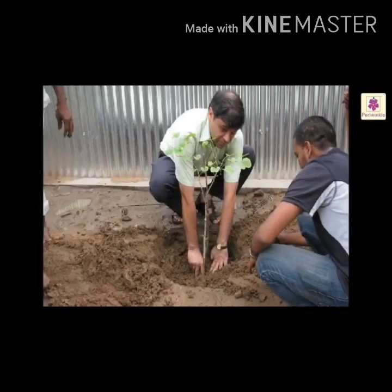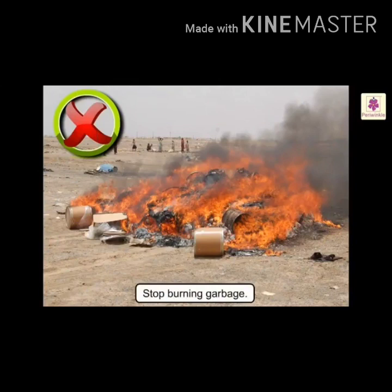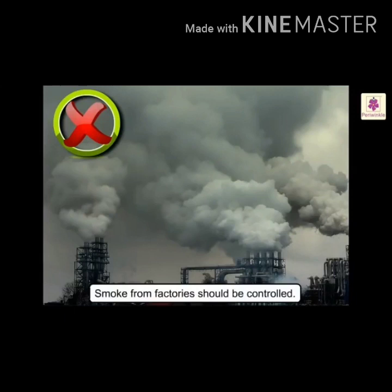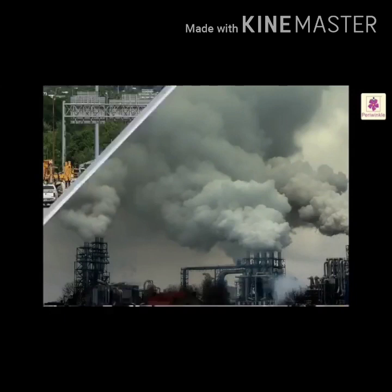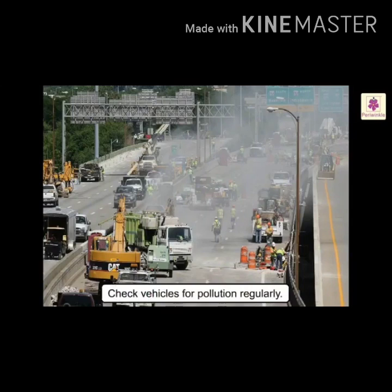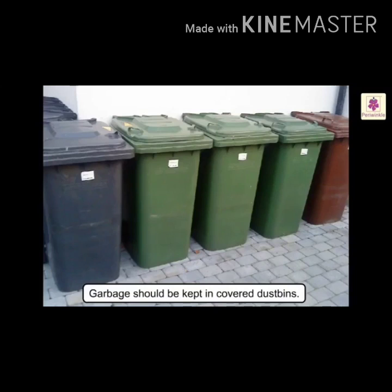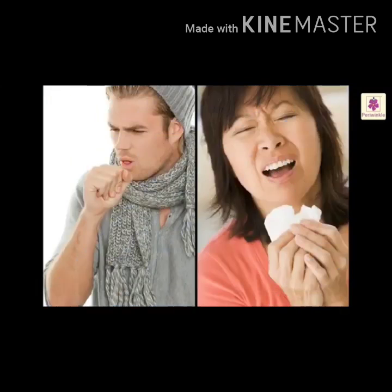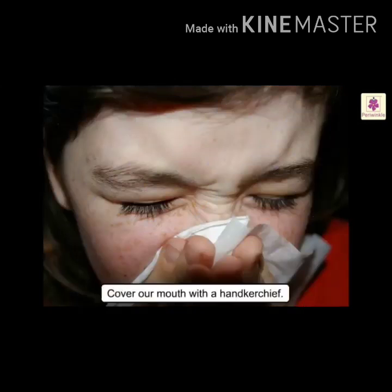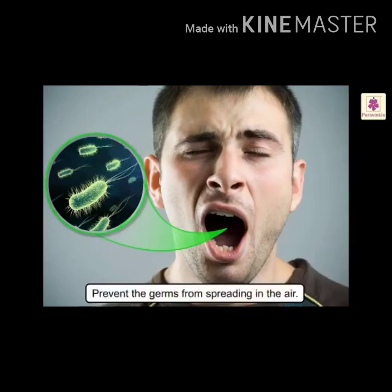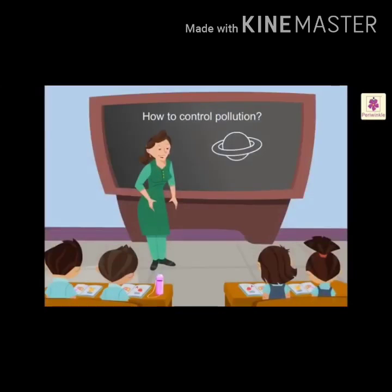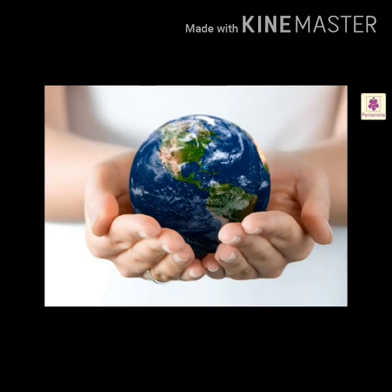The best way to have clean air is to plant more trees, stop burning garbage, and control smoke from factories. Vehicle owners should make sure their vehicles are checked for pollution regularly. Garbage should be kept in covered dustbins. Whenever we cough or sneeze, we should cover our mouths with a handkerchief — this will prevent germs from spreading in the air. We should learn more about pollution and how to control it. This will help us to save our environment.